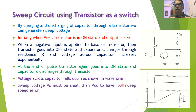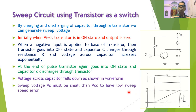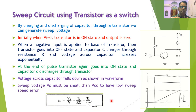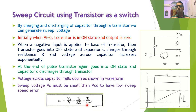To maintain linearity of this sweep voltage, it is necessary that the sweep voltage Vs be smaller than the supply voltage Vcc. If this condition is satisfied, the sweep speed error will be very small and linearity will be much higher. The time constant RC can be replaced by tau, where tau equals RC.